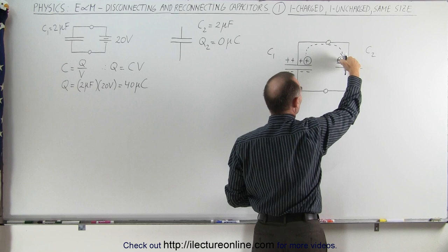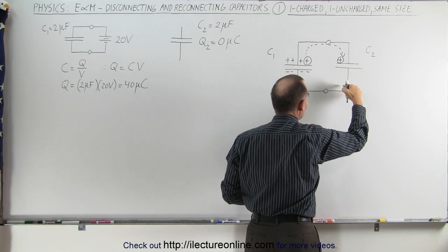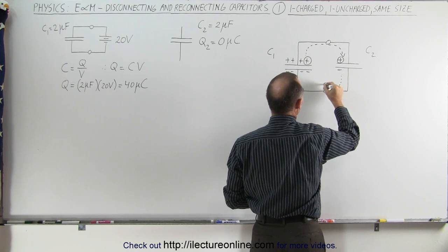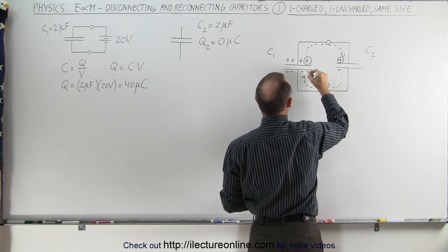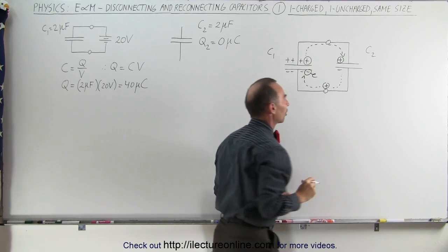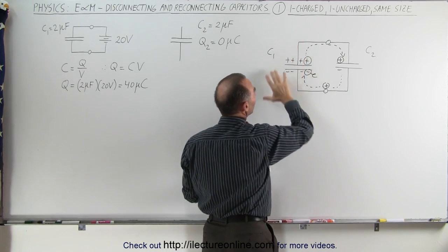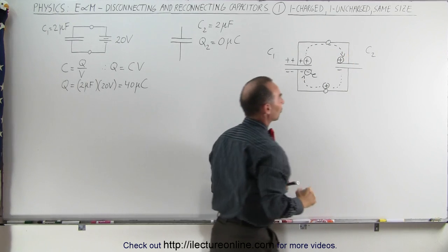When a positive charge goes over here, it repels positive charge from this side of capacitor, making this side negative, and of course that positive charge will then move to this direction and cancel out one of those negative charges. In other words, the amount of charge in this capacitor will decrease, and the amount of charge in that capacitor will increase.